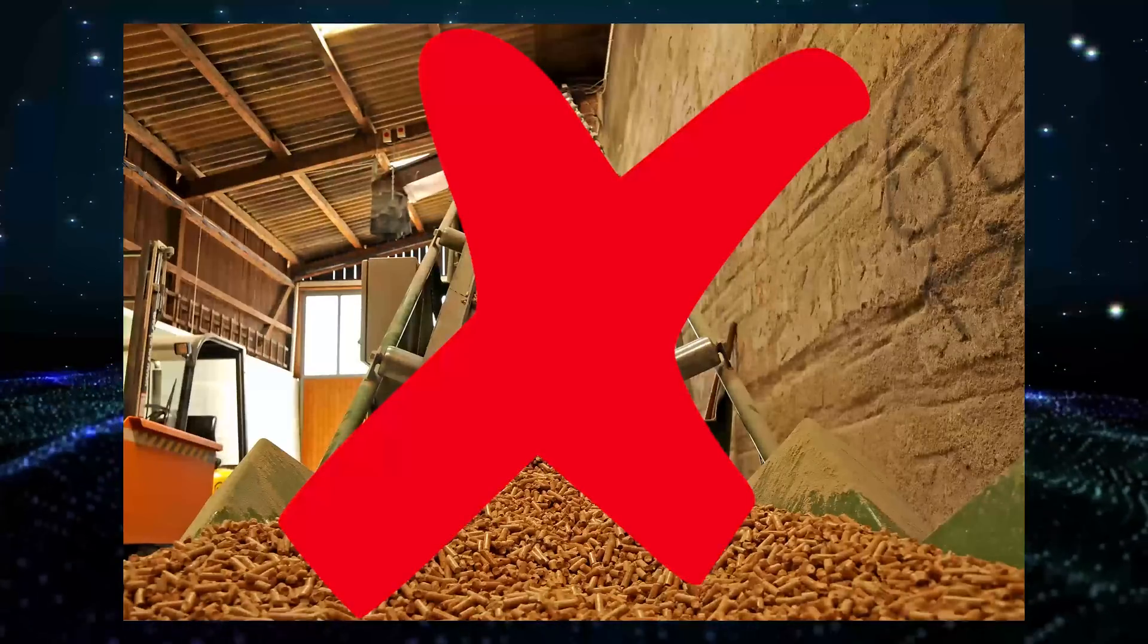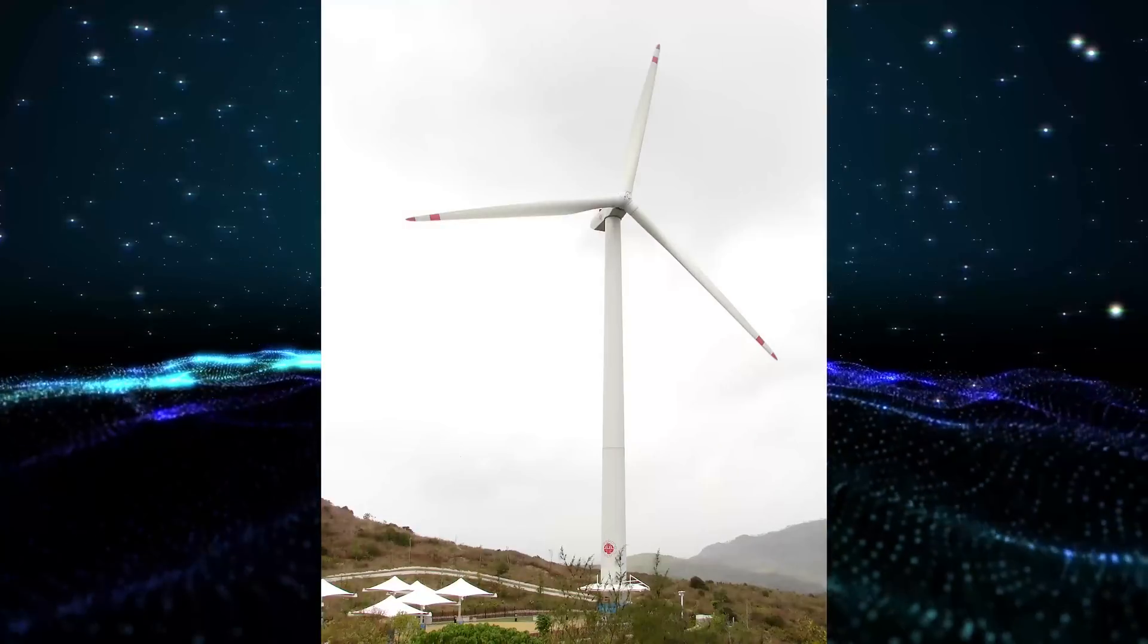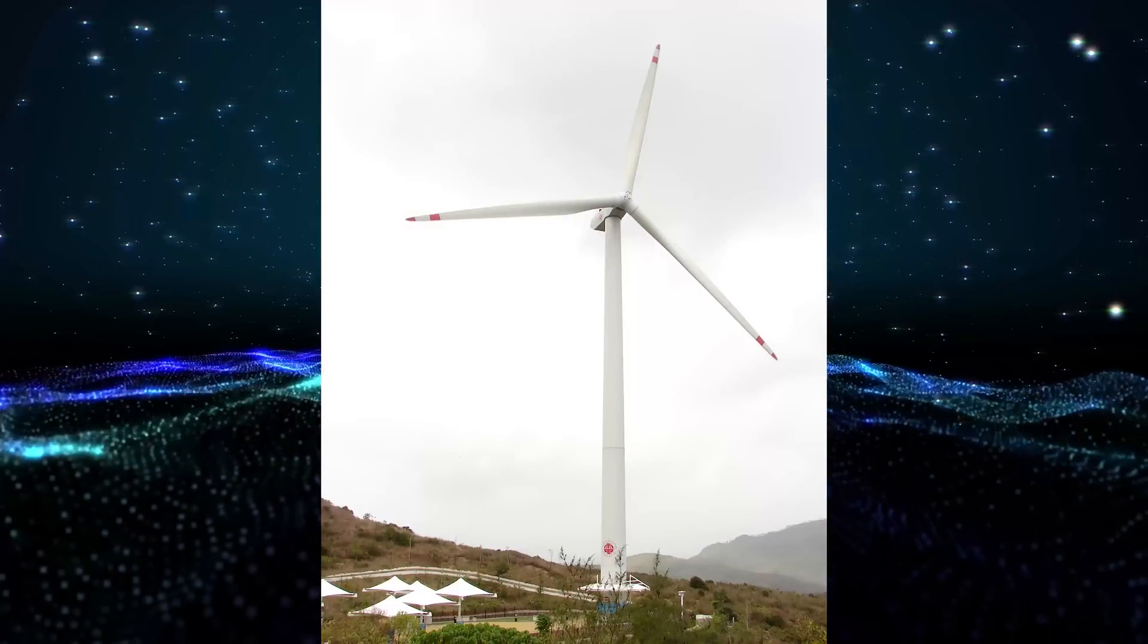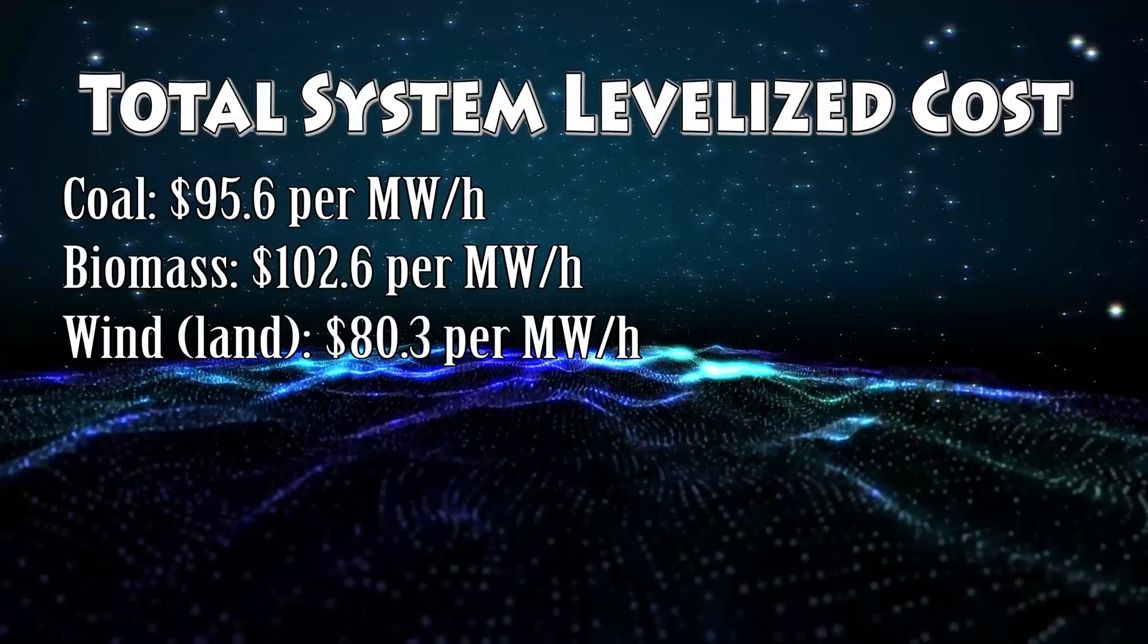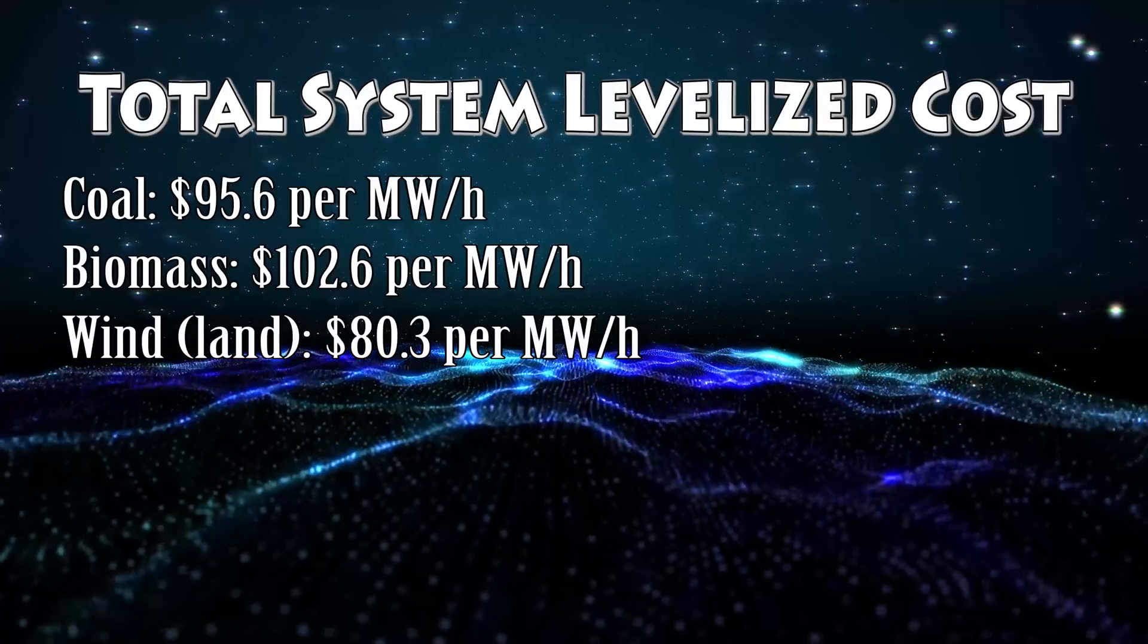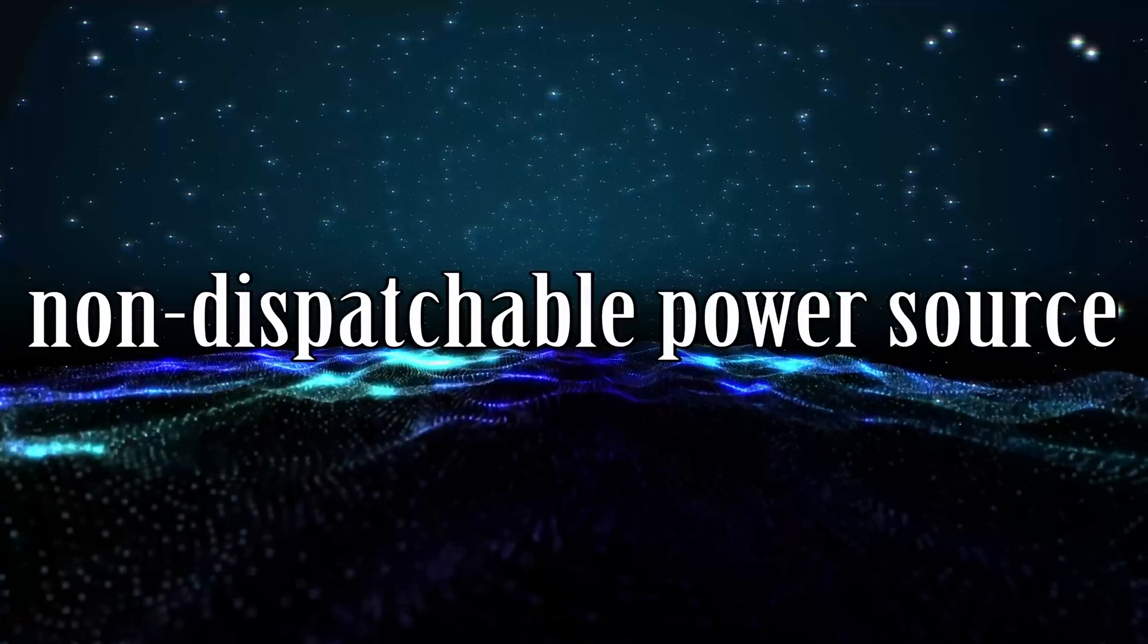Wind turbines are another alternative source of energy. Turbines built on land have a levelized cost of $80.3 per MWh, cheaper than coal. But wind power has a disadvantage. It is a non-dispatchable power source.